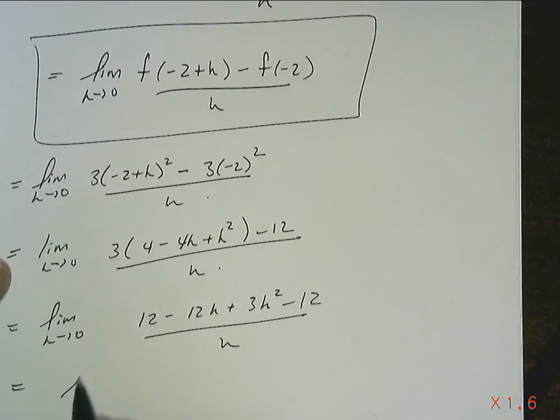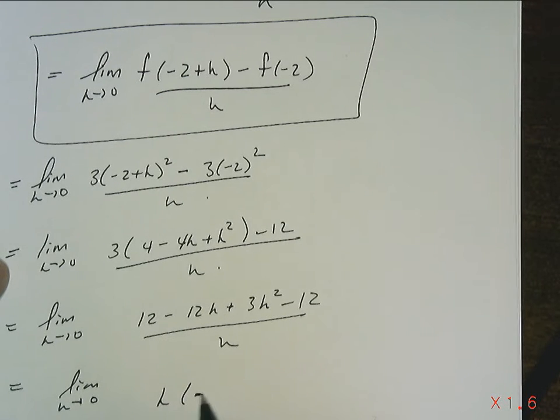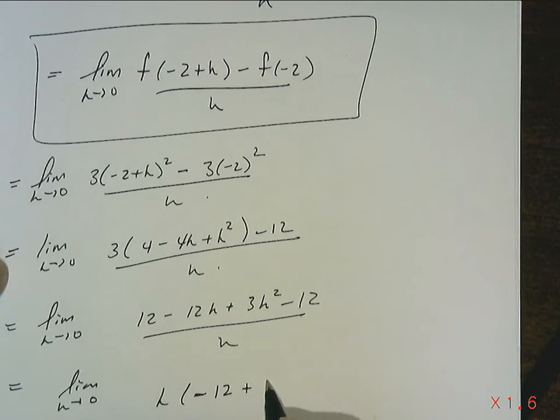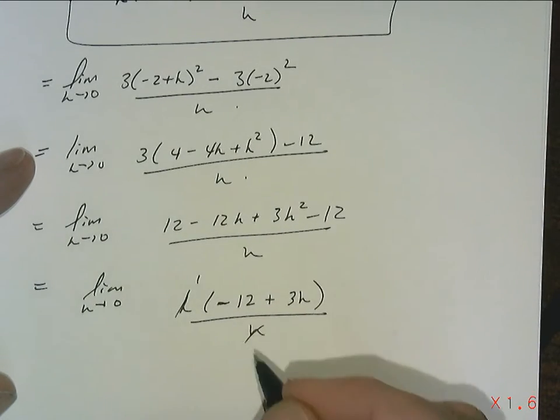That's going to leave me with the limit as h approaches 0. Common factor out an h, I'm going to get an h. Oh, I can common factor out a 3 too, but you know what? I'm not going to, just because. Negative 12 plus 3h over top of h.